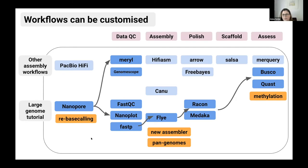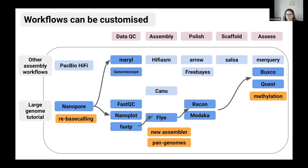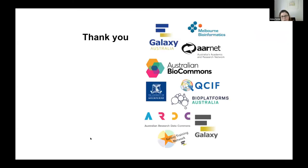We want researchers to feel confident rearranging these workflows to best answer their own research questions. In this example, the dark blue steps are in the genome tutorial and light blue are steps in other assembly workflows such as the vertebrate genome assembly workflows — showing these tools are ideally interchangeable. We also want to keep room for new things, including new technologies that will require new tools and possibly new computational infrastructure. I'd like to thank everyone involved, and in particular the Galaxy Australia team.